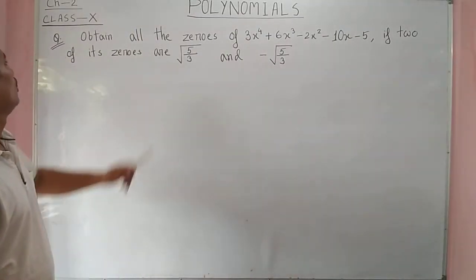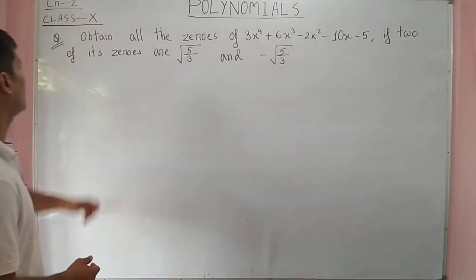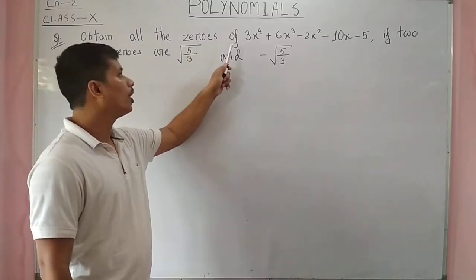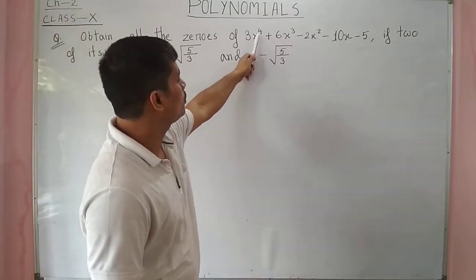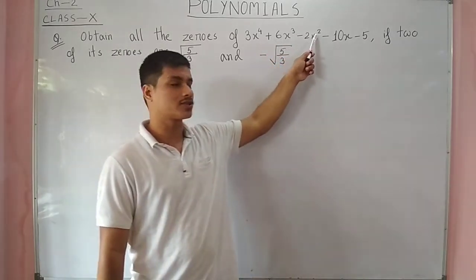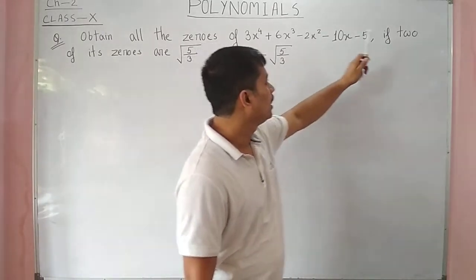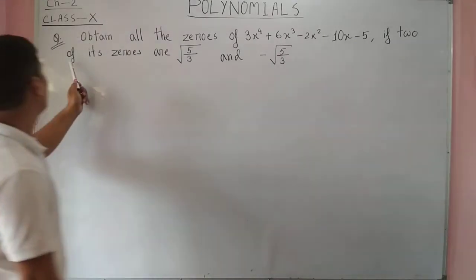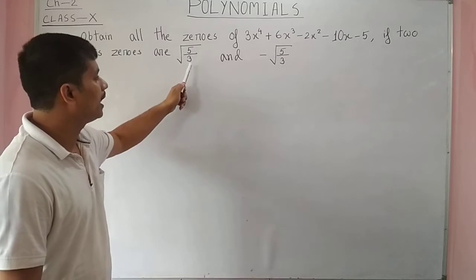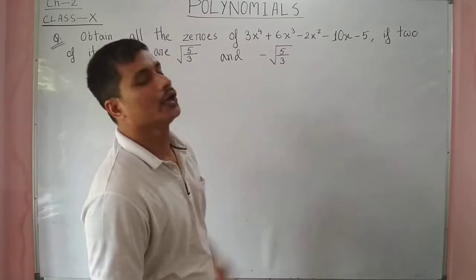Hello students. We are discussing sector polynomials. The equation is: find all the zeros of 3x⁴ + 6x³ - 2x² - 10x - 5. Two of its zeros are √(5/3) and -√(5/3).